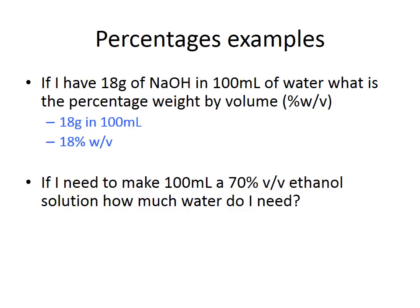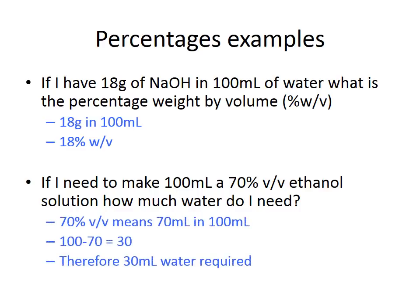In the second example, you need to make a 70% v/v ethanol solution and you have 100 mL total. By the definition of %v/v, 70% v/v means 70 mL of ethanol in 100 mL. So 100 − 70 = 30 mL of water is needed. You would mix 70 mL of ethanol with 30 mL of water, giving a 70% v/v ethanol solution.